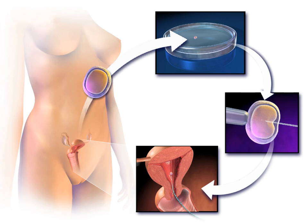Less commonly used techniques in IVF include assisted zona hatching, which is performed shortly before the embryo is transferred to the uterus. A small opening is made in the outer layer surrounding the egg in order to help the embryo hatch out and aid in the implantation process of the growing embryo.